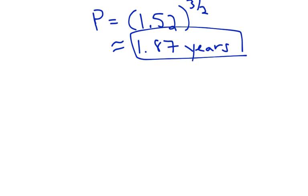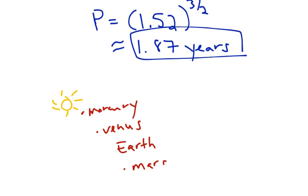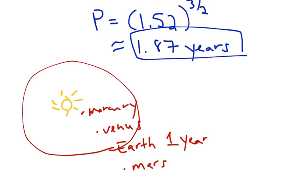So that means it takes Mars 1.87 Earth years to revolve around the Sun. Now, the next question is, does that make sense? Well, I hope it does, because if you think about how the planets work, here's the Sun. And then the first planet is Mercury. The next planet is Venus. The next planet is Earth, we're always the third rock from the Sun. And after Earth is Mars. So, if it takes Earth 1 year to get around the Sun, then it should probably take Mars a little bit longer. And it does. It takes approximately 1.87 years for Mars to get around the Sun.